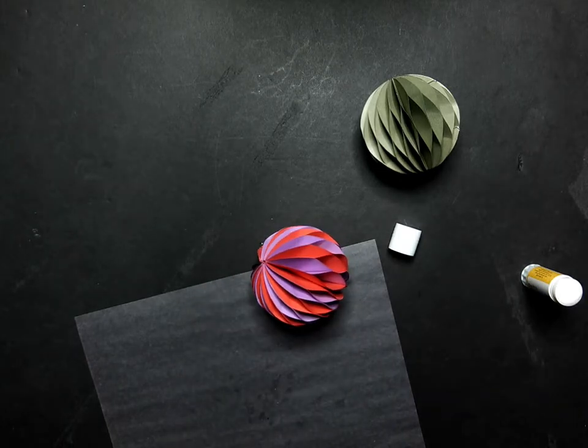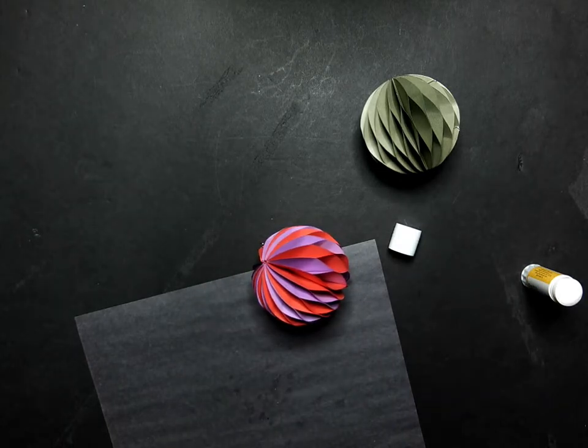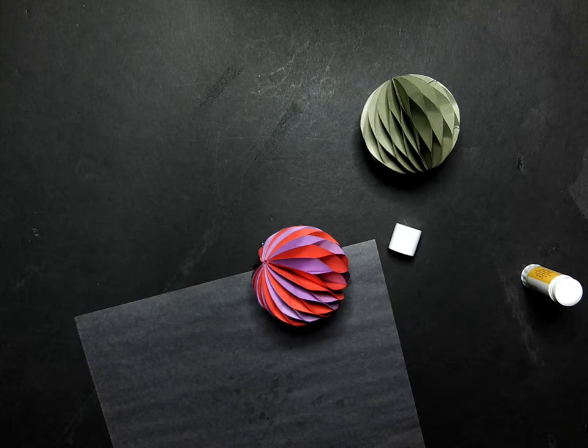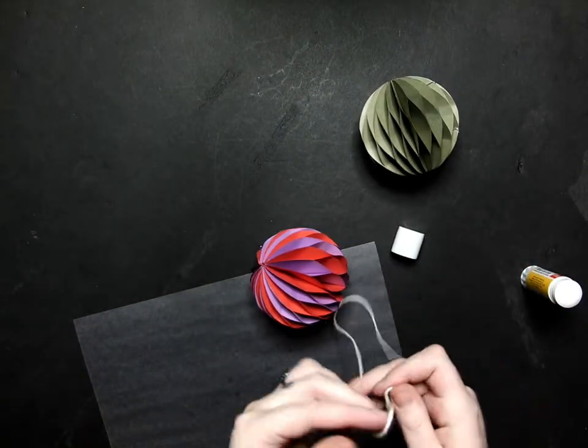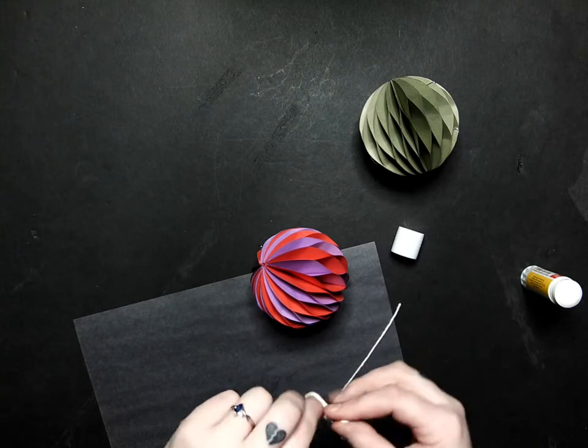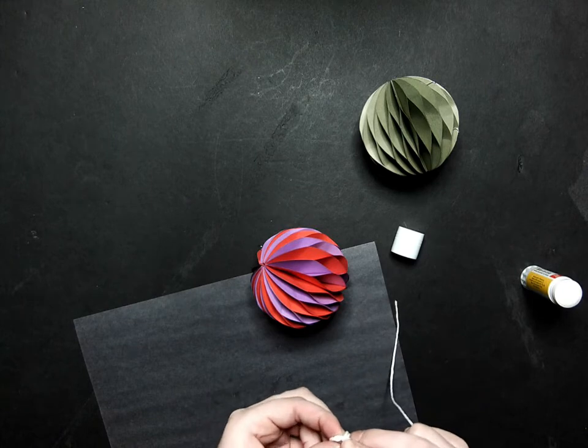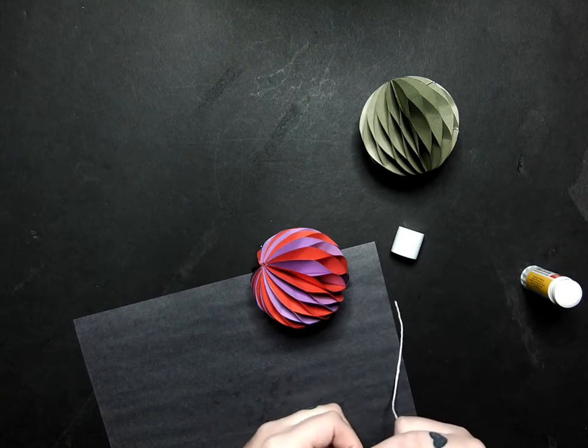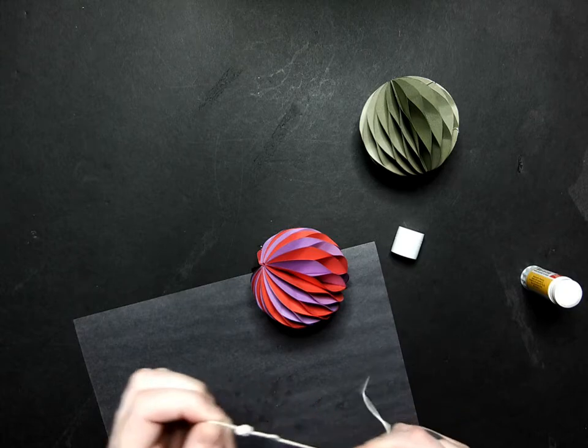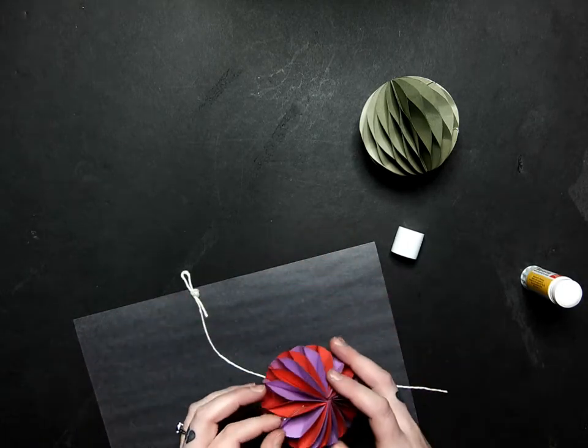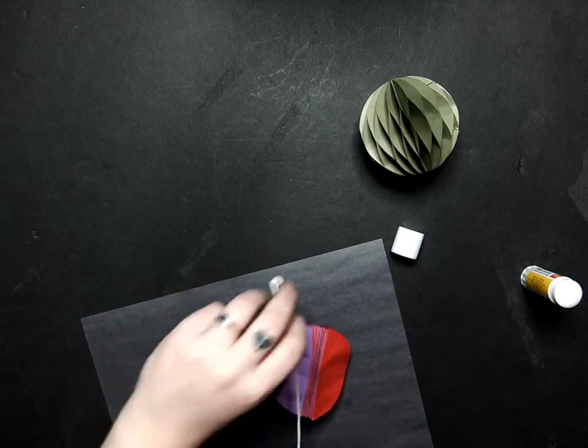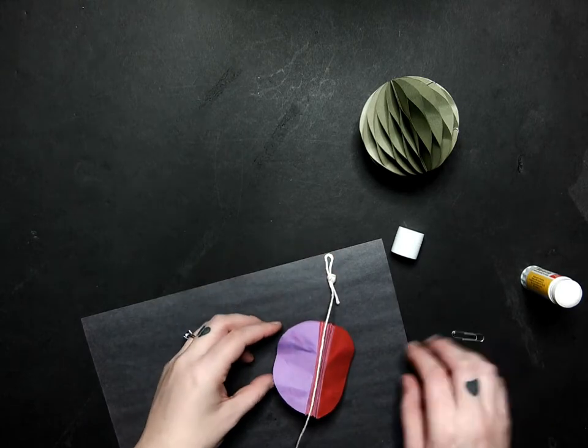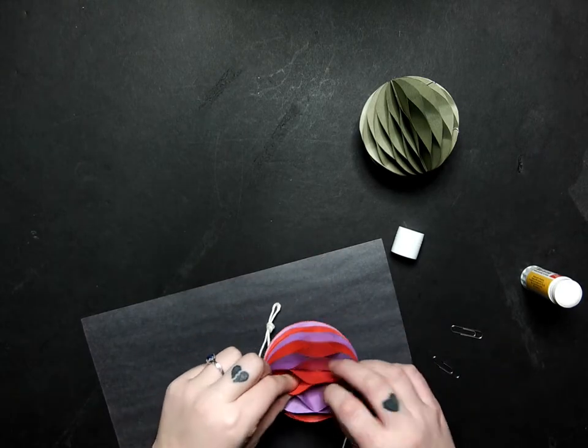Now we also have the option to add some string to those to make them more ornament-y. So I have a piece of string here. I'm going to tie a loop here and wrap the string around a couple of times before I pull it through, just like that. Your option is you can lay that in there before you glue it together. And then you can tie another like that.